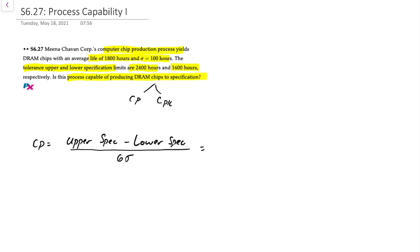In our problem we have an upper specification of 2400 hours, the lower spec is 1600 hours, and divide by six times 100 or 600. So this gives us 800 over 600 and yields a process capability ratio of 1.33. Now since this 1.33 is greater than 1.0, we can conclude that the process is capable of producing chips within tolerance.